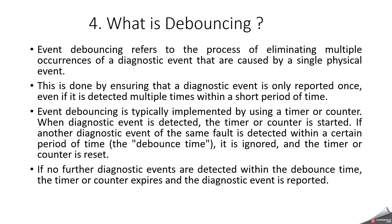What is debouncing? Event debouncing refers to the process of eliminating multiple occurrences of a diagnostic event that are caused by a single physical event. Whenever the event is reported, the debounce counter will start based on your configuration. Within that time, if no further report or inactivation of the event happens, then the particular fault will be moved to the next state. Debouncing is typically implemented using a timer or counter. When a diagnostic event is detected, the timer or counter is started. If another diagnostic event of the same fault is detected within the debounce time, it is ignored and the timer or counter is reset.